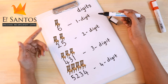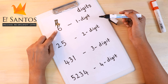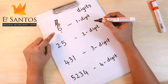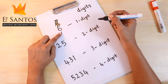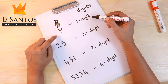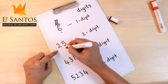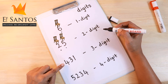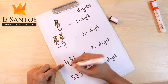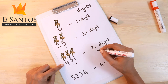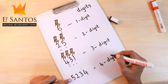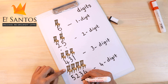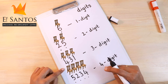Let's go over this one more time. Six has one number, so six has one place — it's called a one digit number. Twenty-five has two places, hence a two digit number. Four hundred and thirty-one has three places. Five thousand two hundred and thirty-four has four places — one, two, three, four — so it's called a four digit number.